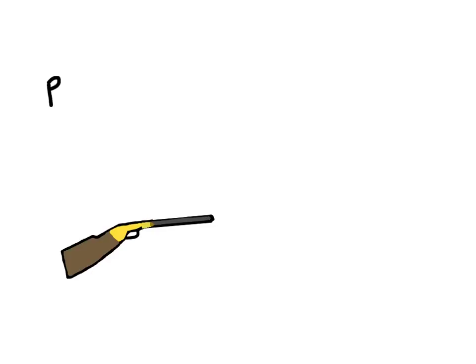Momentum is equal to M times V, where M stands for mass and V stands for velocity. Now we have two objects here, both the bullet and the gun. So if we add their momentums together, it should be equal to zero.